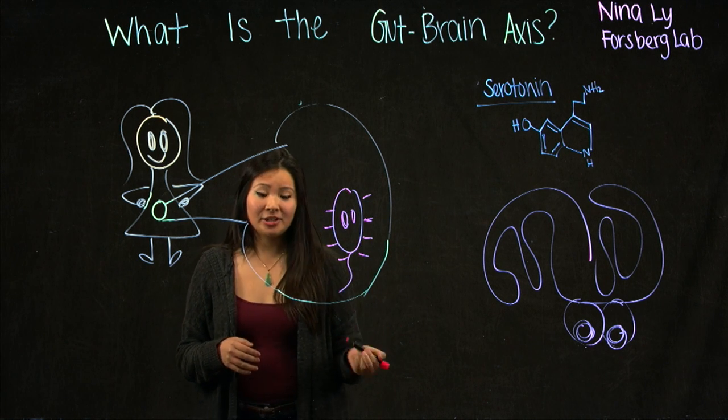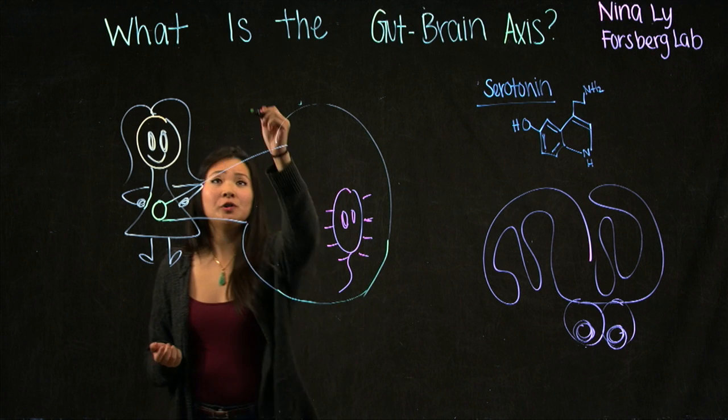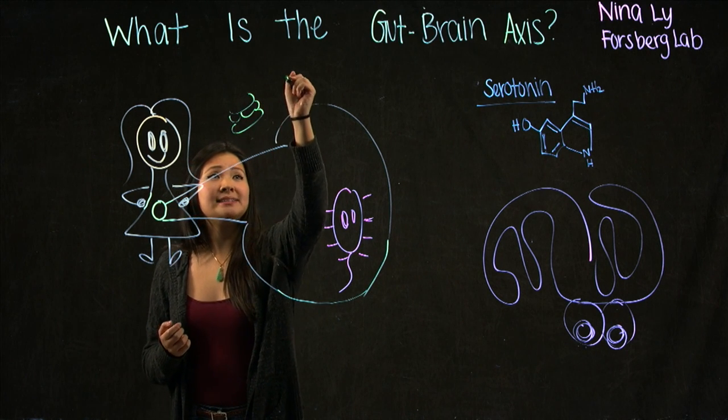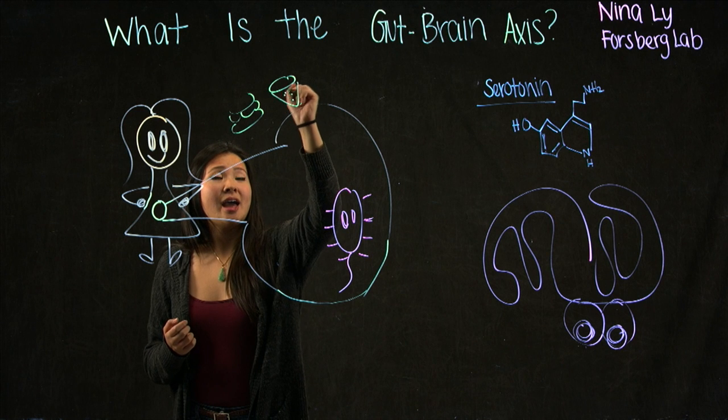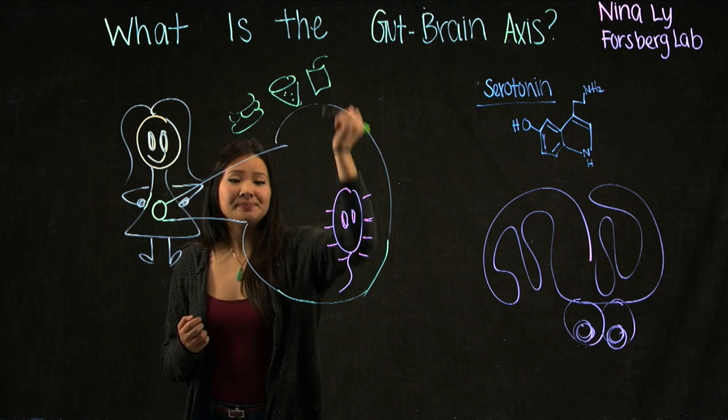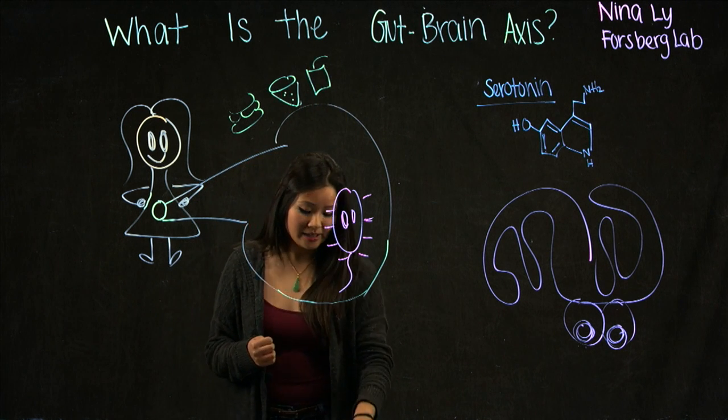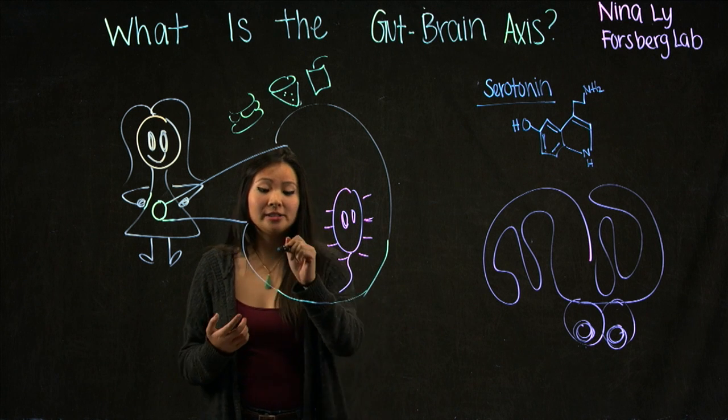And these bacteria help us digest our food, like our hamburgers, pizza, and even the drinks that we drink. And these bacteria produce things called metabolites.